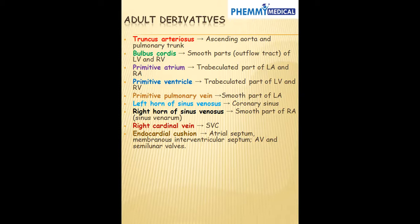Let's talk about the adult derivatives of most of these structures. The truncus arteriosus is going to form the ascending aorta and pulmonary trunk. Bulbus cordis is going to form the smooth part of the left and right ventricle. The primitive atrium is going to form the trabecular part of the left and right atrium. The primitive ventricle is going to form the trabecular part of the left and right ventricle. The primitive pulmonary vein is going to form the smooth part of the left atrium. The left arm of the sinus venosus is going to form the coronary sinus.